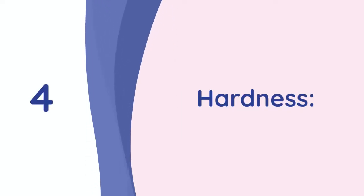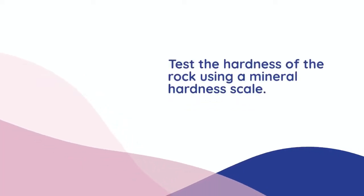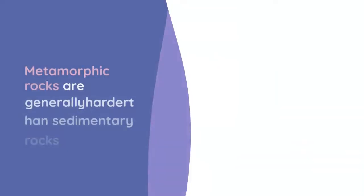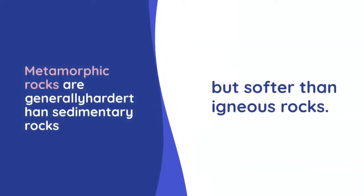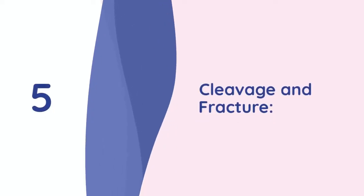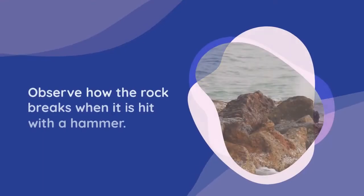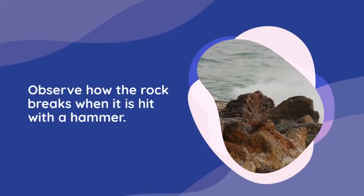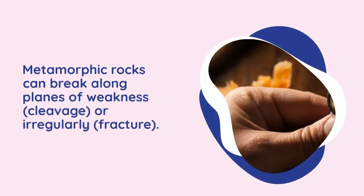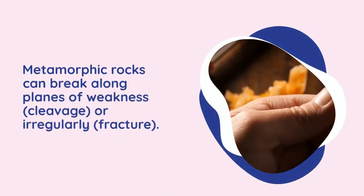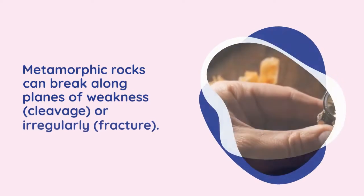4. Hardness. Test the hardness of the rock using a mineral hardness scale. Metamorphic rocks are generally harder than sedimentary rocks, but softer than igneous rocks. 5. Cleavage and fracture. Observe how the rock breaks when it is hit with a hammer. Metamorphic rocks can break along planes of weakness — cleavage — or irregularly — fracture.